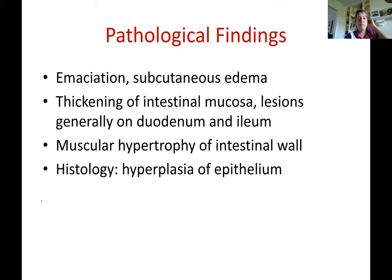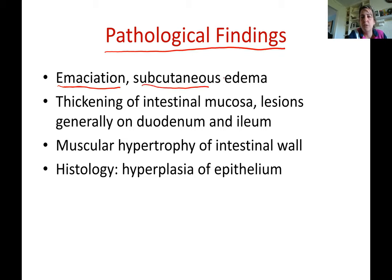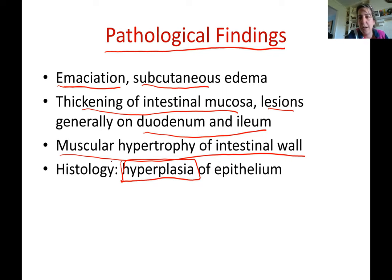The pathological findings — what you see when the horse has died and specimens are sent to pathology — include emaciation with no subcutaneous fat deposits, subcutaneous edema with thickened skin, and thickening of the intestinal mucosa. Lesions are generally found in the duodenum and ileum. There is also muscular hypertrophy of the intestinal wall, and hyperplasia — an increase in the number of epithelial cells of the GI tract.